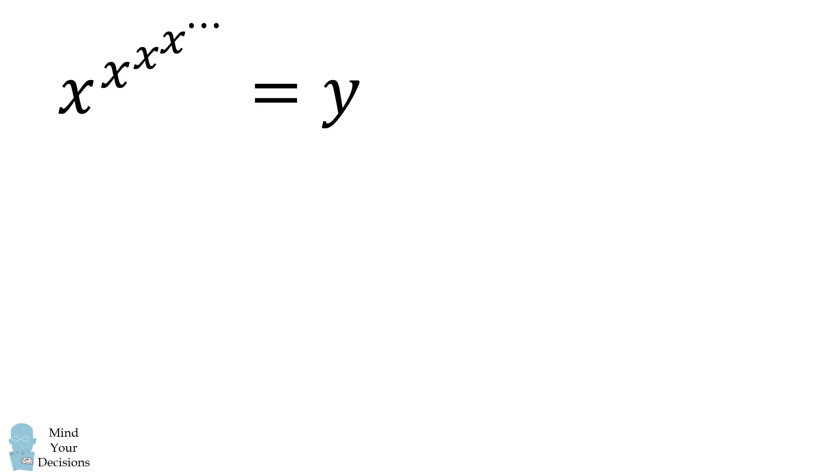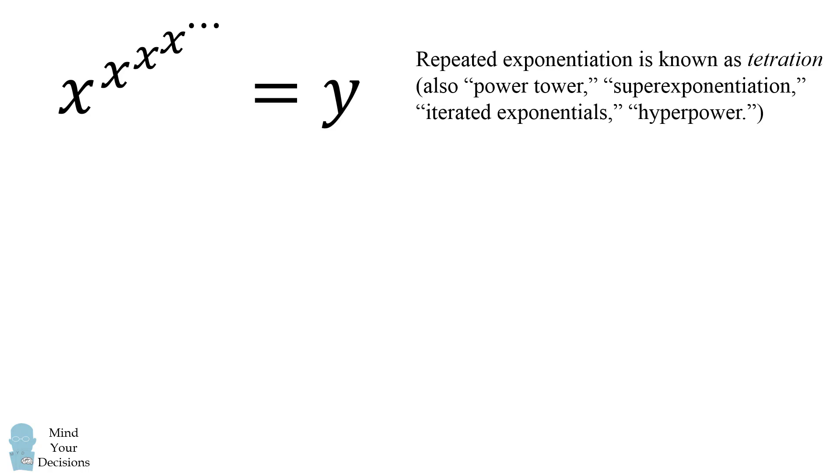For a little bit of a longer explanation, imagine we have this infinite tower of exponents, x to the power of x, all the way infinitely many times equal to y. This is known as tetration, or it's also sometimes referred to as power tower, super exponentiation, iterated exponentials, or hyper power.